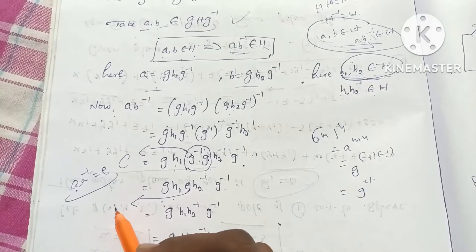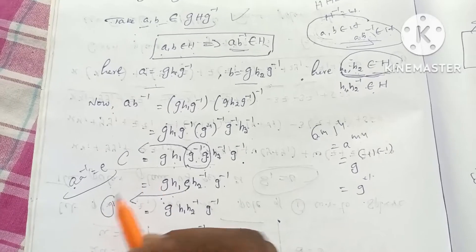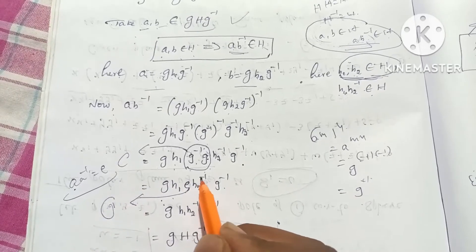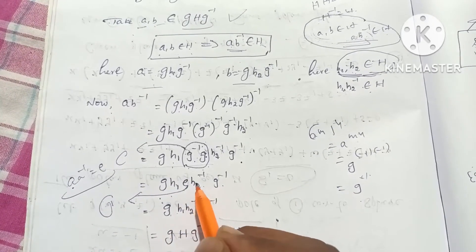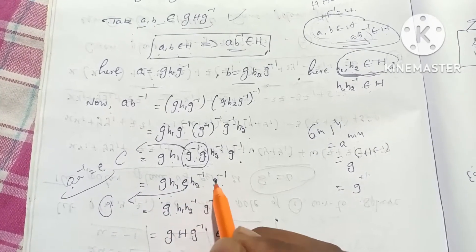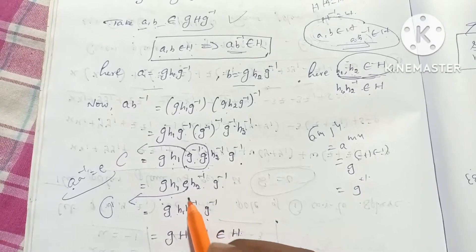The identity element is 1. So 1 into H₂⁻¹ gives us g·H₁·H₂⁻¹·g⁻¹.